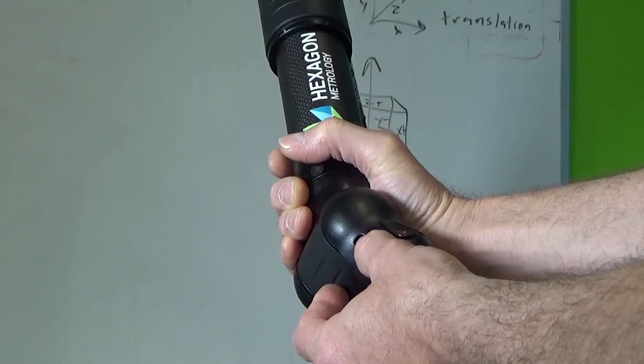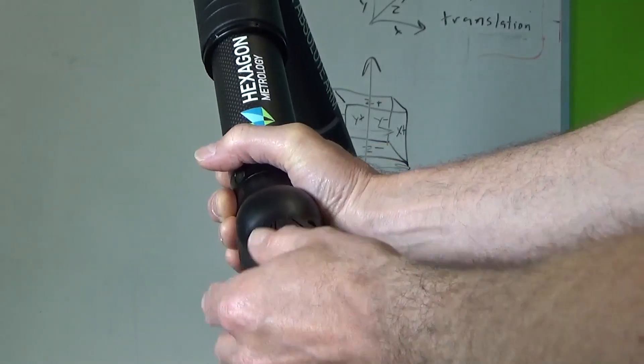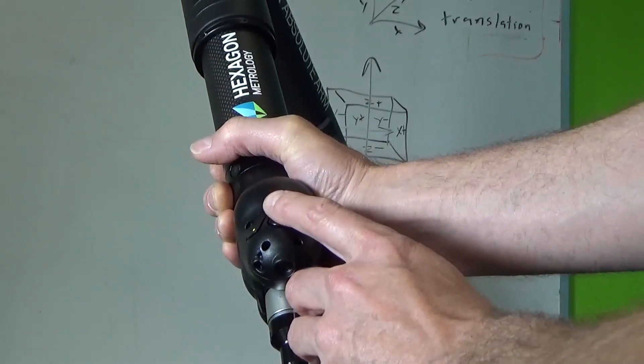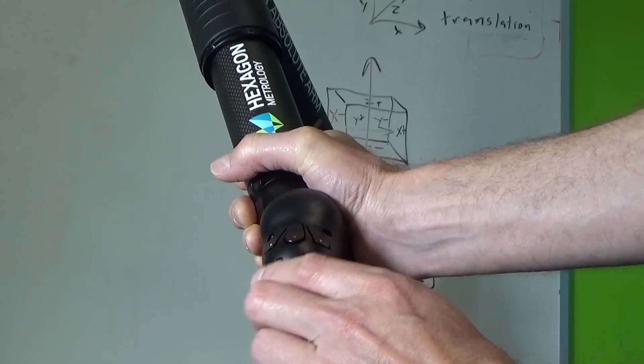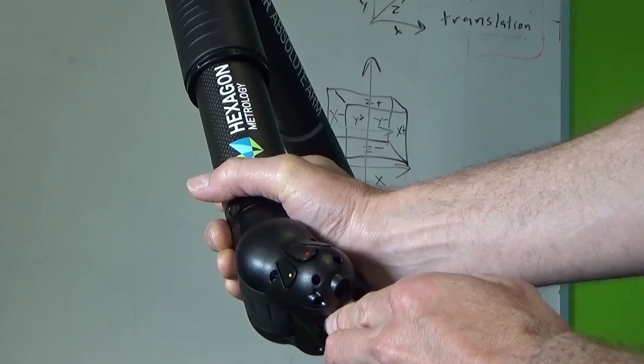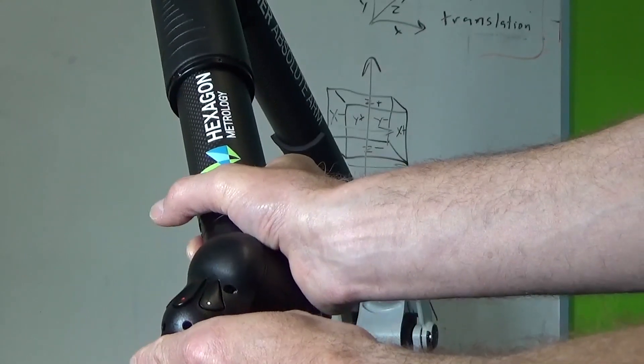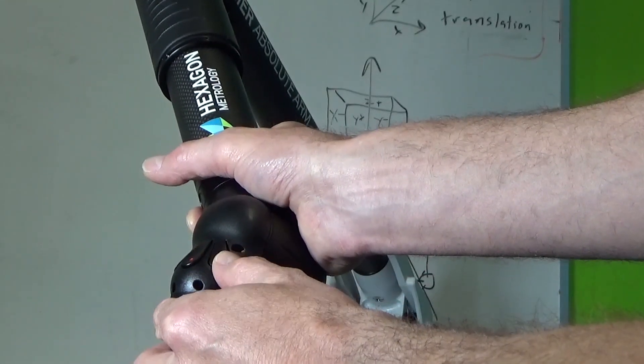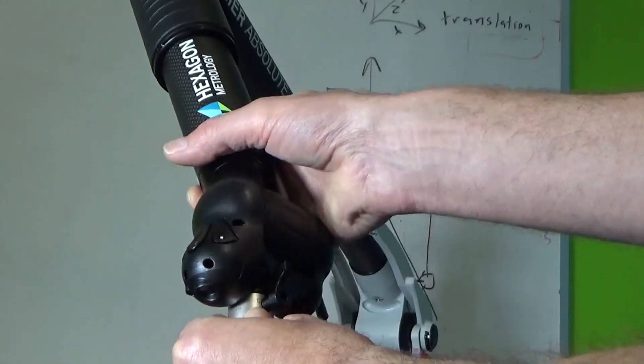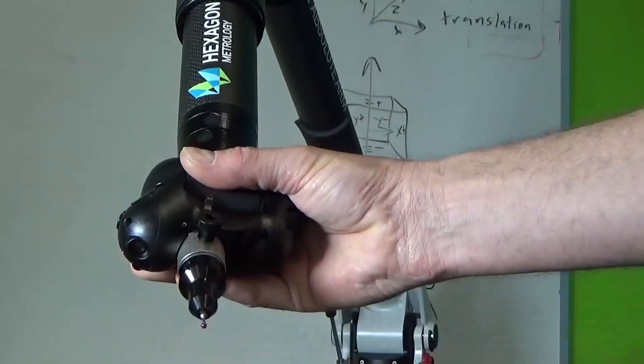Okay so here's the tip. We have some buttons here. A yellow button, a red button and a white button. The red button when you have the tip in contact with the surface you're going to press that and it will register a hit. The yellow button is the end of a feature and the white button is if you have an incorrect hit you can erase it.